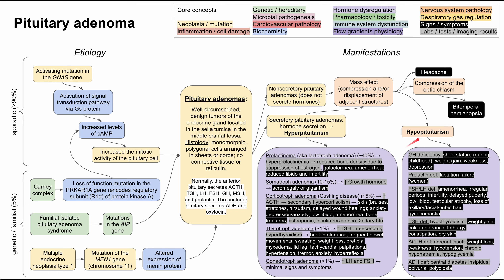In hypopituitarism, a GH deficiency causes short stature if it occurs during childhood, as well as weight gain, weakness, and depression. Prolactin deficiency may cause lactation failure after delivery. FSH or LH deficiency in women can cause amenorrhea, irregular periods, infertility, or delayed puberty. In men, it may cause low libido, testicular atrophy, loss of facial, axillary, or pubic hair, and gynecomastia. TSH deficiency essentially causes hypothyroidism with weight gain, cold intolerance, lethargy, constipation, and dry skin.